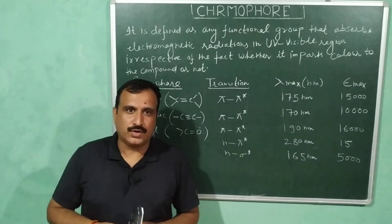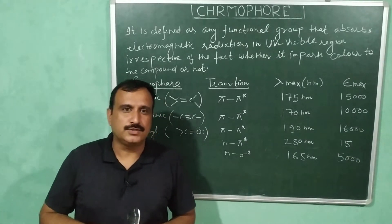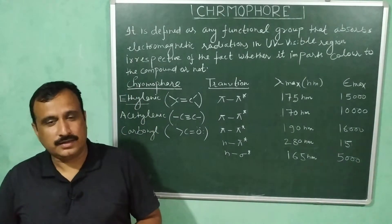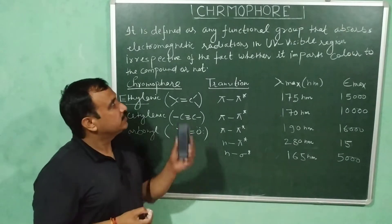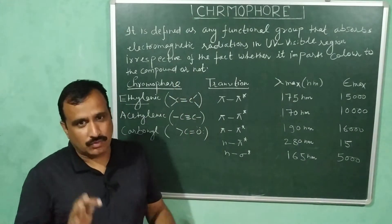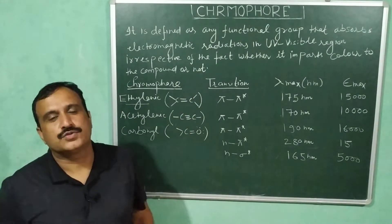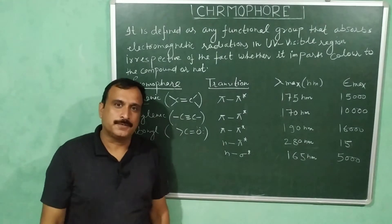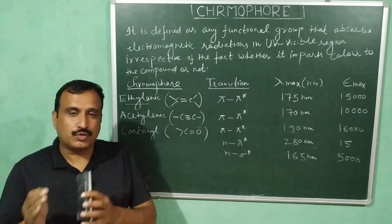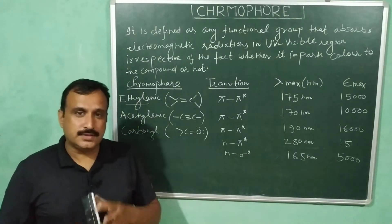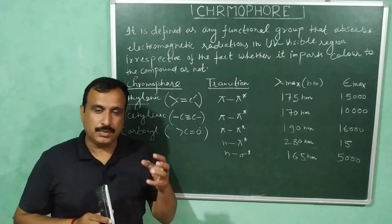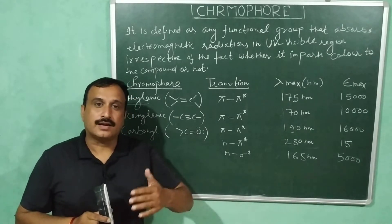Hello everyone. A very warm welcome to DMG chemistry classes. In this video, I am going to discuss the concept of chromophore, a very important concept in UV visible spectroscopy. This word chromophore is derived from the Greek word 'chromophorus', meaning color carrier.